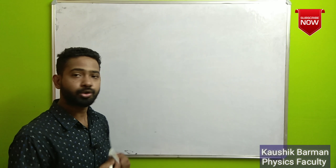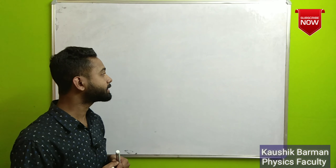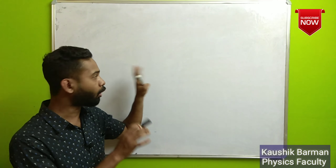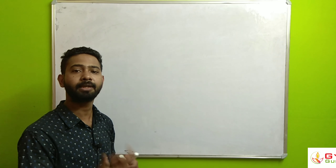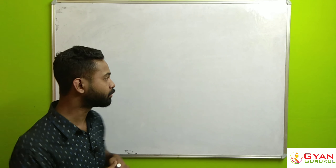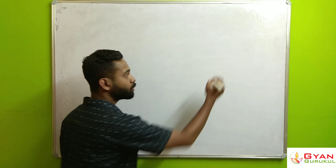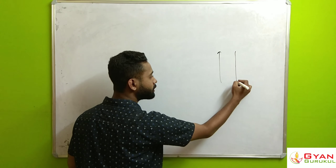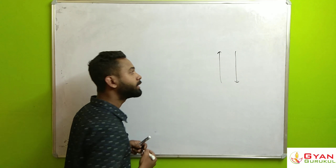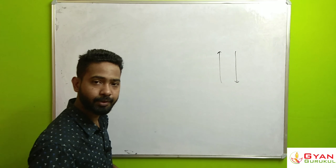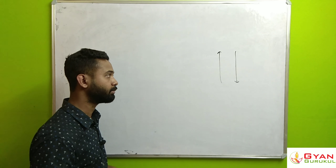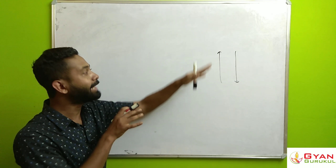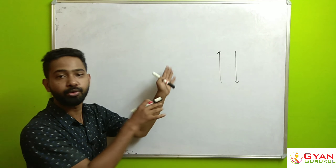Hello everybody. Today we will be discussing a particular type of problem which combines both types of vertical motion. As already discussed, there are two types of vertical motion: upward vertical motion as well as downward vertical motion. Now we will be discussing problems where we use both.